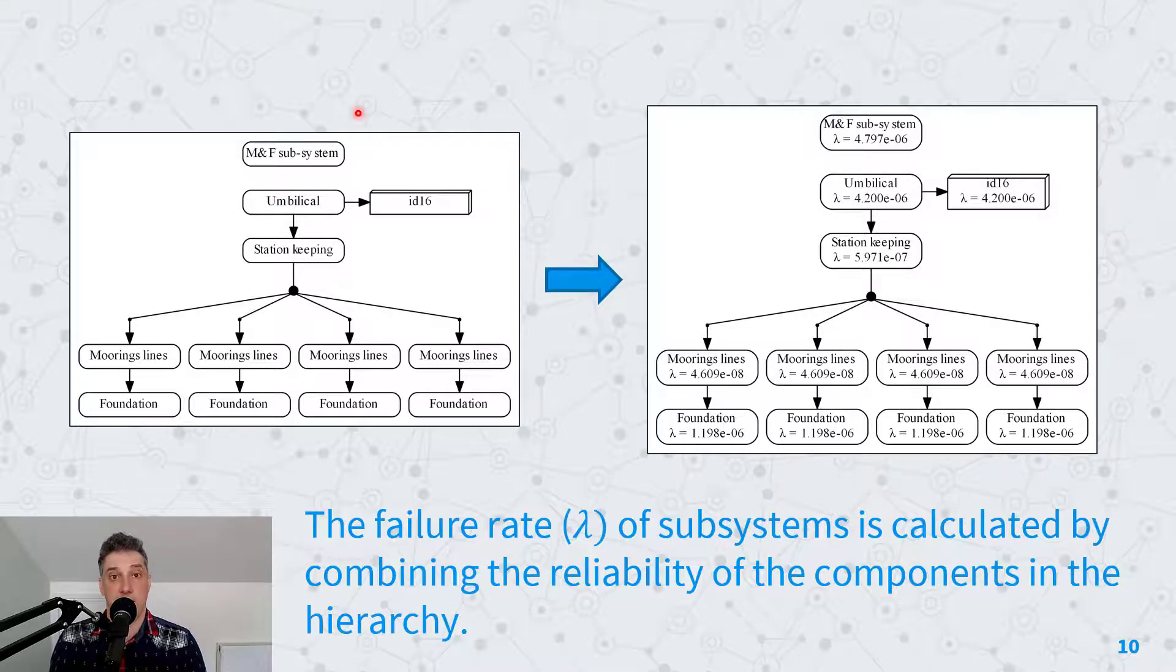The umbilical and the station keeping are combined in serial again to give the mooring and foundation subsystem value. We're looking for failure rate here, so we plug failure rates into these components. If you can imagine, all the components here will have a failure rate applied to them, a fixed failure rate. These failure rates combine to produce failure rates for these different subsystems.